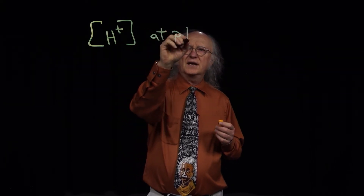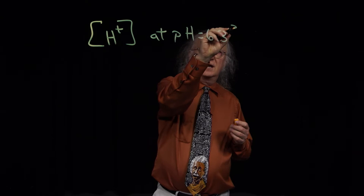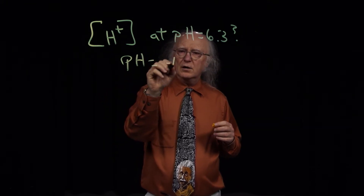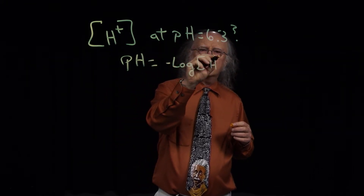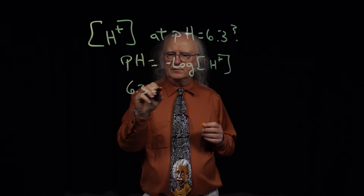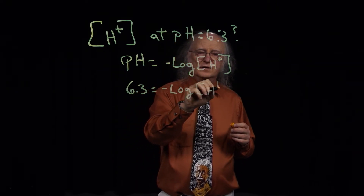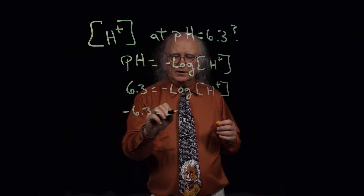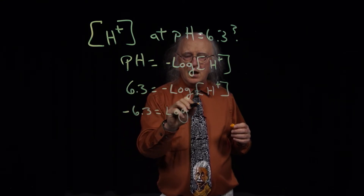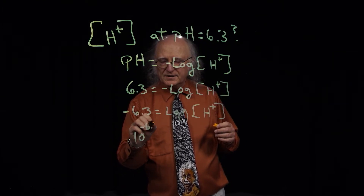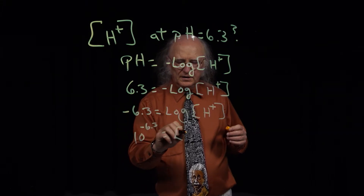We're interested in the proton concentration at pH equals 6.3. We remember that pH is equal to the negative log of the hydrogen ion concentration. So 6.3 is equal to the negative log of the hydrogen ion concentration. Taking the negative sign to the other side, negative 6.3 is equal to the log of the hydrogen ion concentration. To get rid of the log term, 10 to the minus 6.3 is equal to the hydrogen ion concentration.